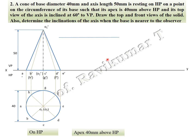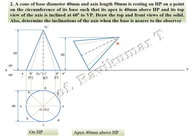For the second position, draw a 40 mm line above HP — above HP means it is the front view. The circumference point should be placed above 40 mm, meaning O1 should be placed above 40 mm. The base touches the XY line and the apex should touch the 40 mm line. Extend the axis line to the XY line and find the angle.